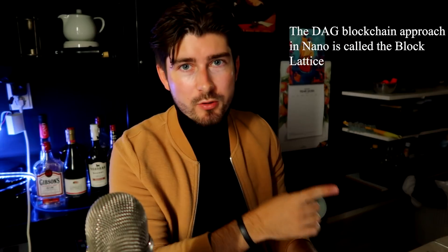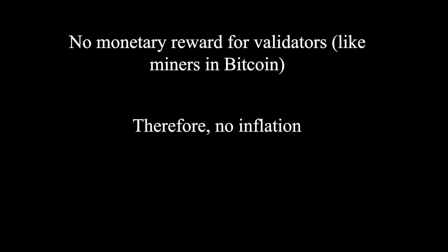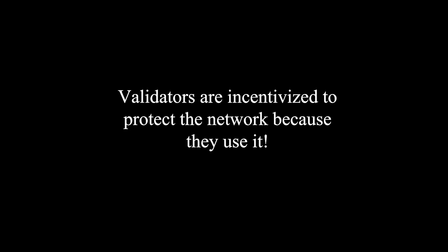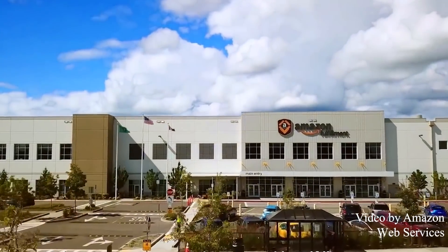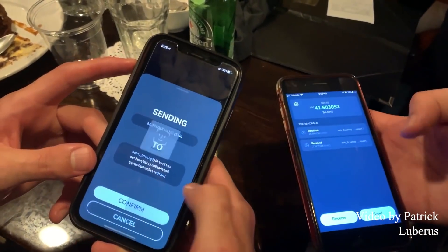Nano uses a different approach than the traditional blockchain called a DAG, or Directed Acyclic Graph. With this approach, instead of having one blockchain where transactions get put into blocks, everyone has their own blockchain, with each block containing just one transaction. So no one has to wait to get their transaction included in a block. This removes waiting times, queues, and fees to cut in front of the line. Validators do not get a monetary reward for validating transactions, like miners do in Bitcoin — this means there is no inflation at all with Nano. Validators are incentivized to protect the network because they use it themselves. For example, if you're a big company accepting Nano, you want to make sure transactions are legit, so you run a node to verify transactions yourself.